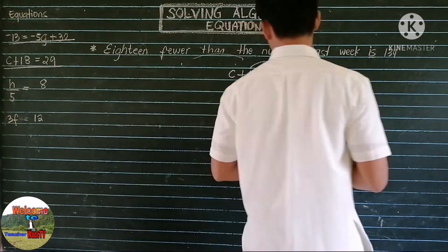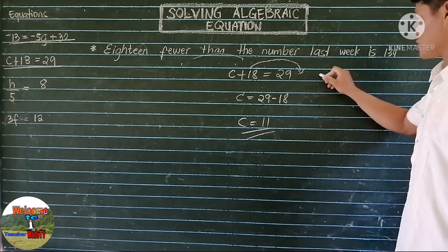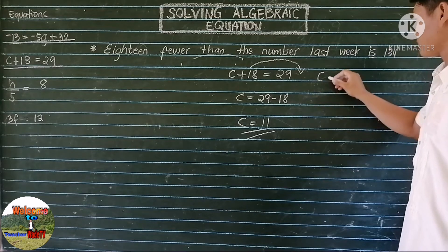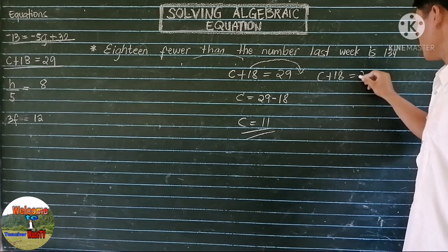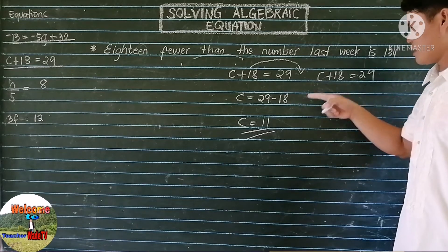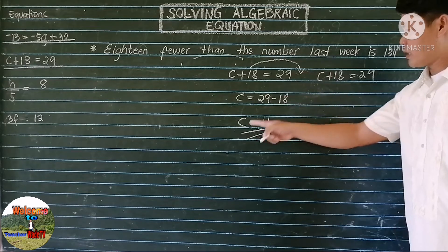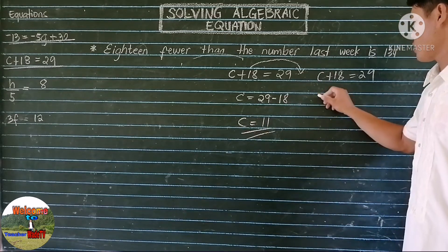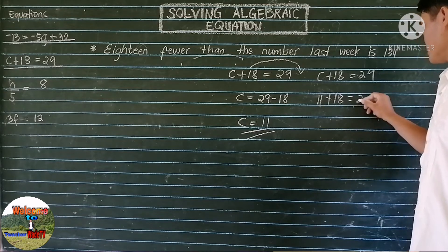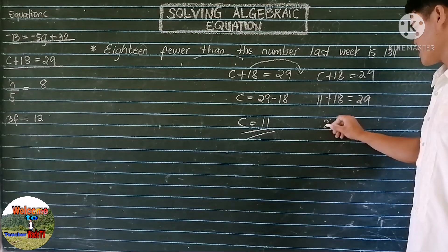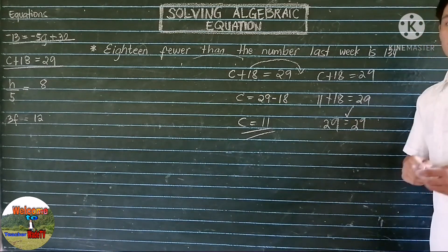Let us check if this is correct. Copy the original equation: C plus 18 equals 29, and substitute 11 for C. So 11 plus 18 equals 29. Our answer is 29 equals 29, so it is correct.